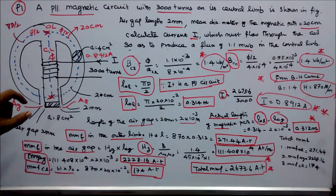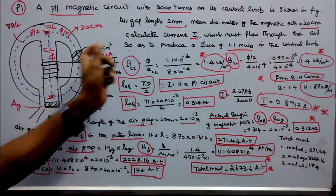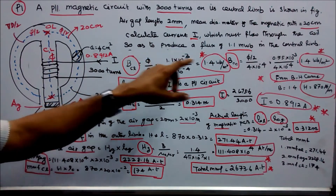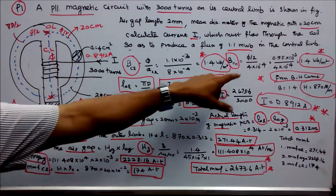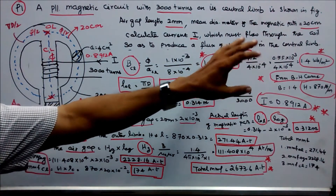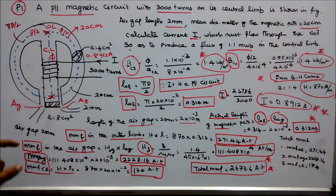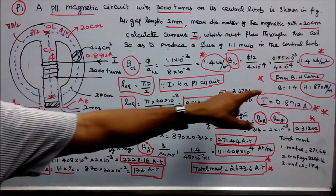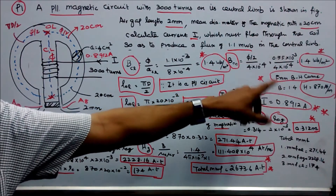Similarly, find the flux density in the outer limb. B = φ/2 because it is a parallel circuit. φ/2 = 0.55 × 10⁻³. Cross-sectional area is 4 cm² = 4 × 10⁻⁴. Therefore, flux density in the outer limb is also 1.4 T per m². Since the B value is the same in both limbs, we can find H from the BH curve. For 1.4 T, H = 870 ampere-turns per meter.